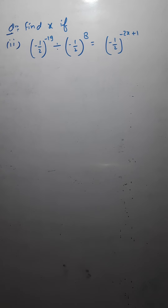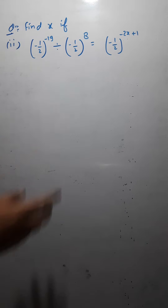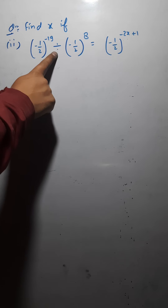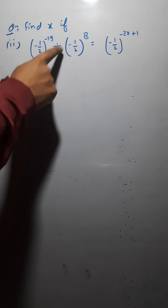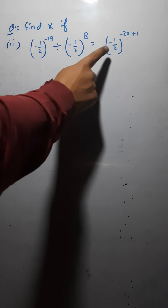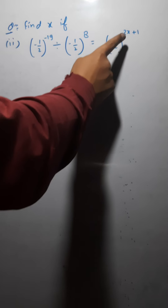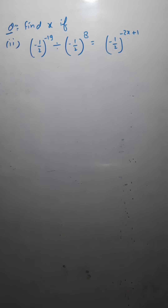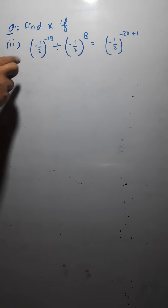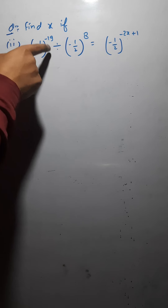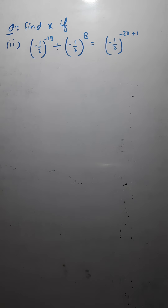Now the next question: minus 1/2 whole raised to the power minus 19, divided by minus 1/2 whole raised to the power 8, equals minus 1/2 raised to the power minus 2x plus 1. In the previous question there was multiplication; here it is division.